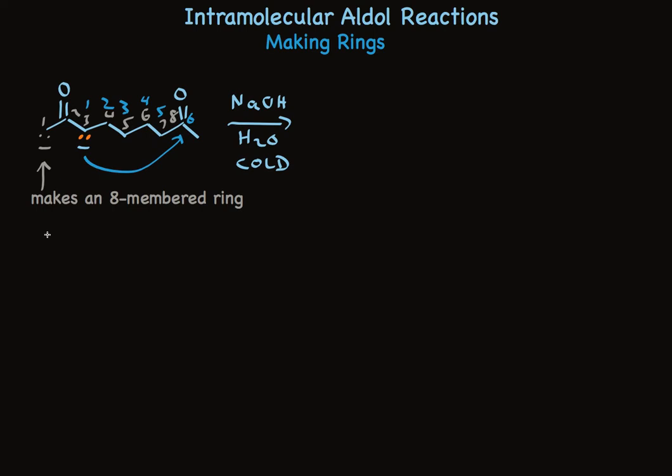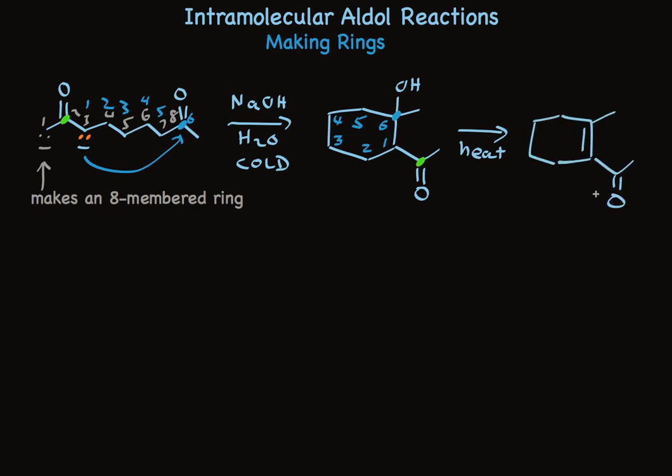Now just to help us keep things straight, I'm going to put a blue dot on the carbonyl that undergoes nucleophilic addition, and a bright green dot on the other carbonyl. And I've numbered the carbons so we can track them easily. This is a 3-hydroxy carbonyl compound. And if we heat this reaction, we'll lose water to make the alpha-beta unsaturated ketone. This reaction proceeds well and gives very good yields of the product.